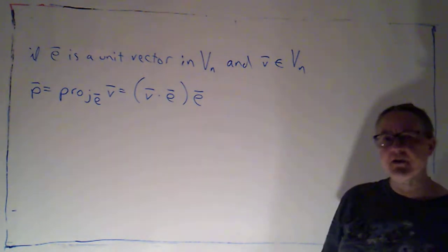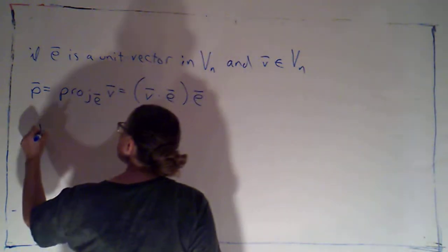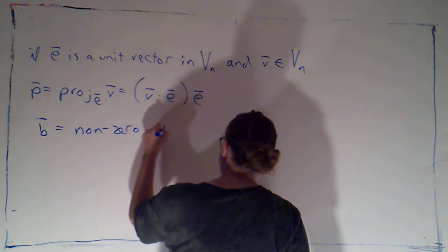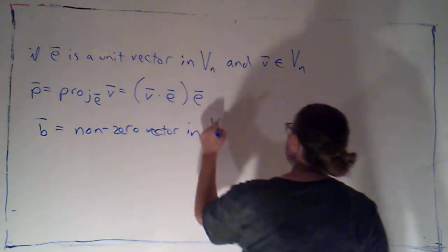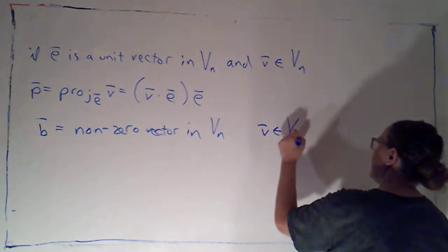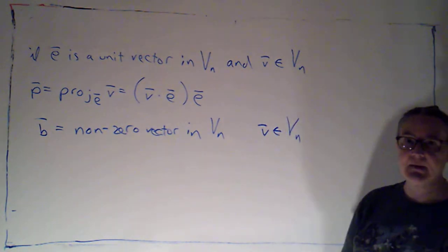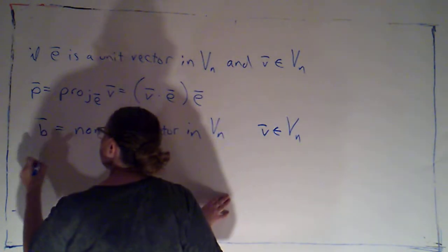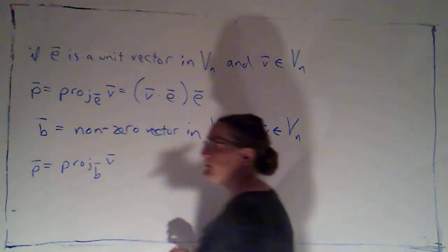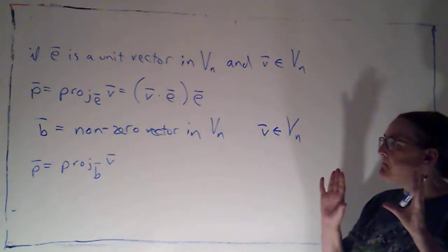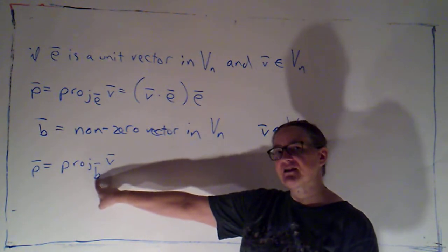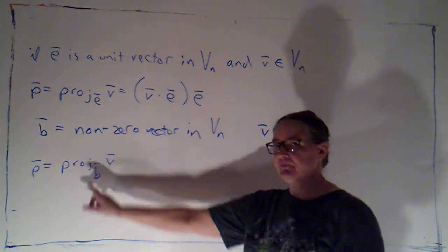Alright, what I want to do now though, is I want to say, let's let B just be a non-zero vector in N space. And V is still going to be just some vector in N space. And now I want to calculate P, which is going to be the projection of V onto B. But I'm getting rid of the restriction that the vector I'm projecting onto be a unit vector.